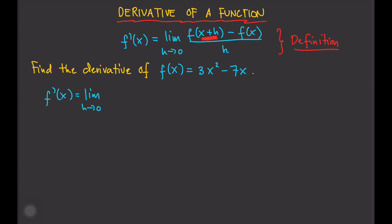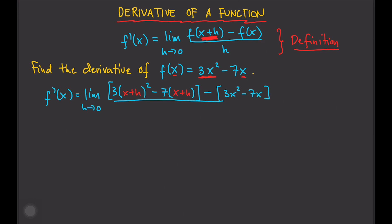Every time you see x, you replace that with x plus h. So f of x plus h will be 3 times (x plus h) squared — instead of writing 3x squared, we write 3 times (x plus h) squared — minus, and instead of writing 7x, we write 7 times (x plus h). Then minus f of x, which is just 3x squared minus 7x, so copy that, and divide by h.